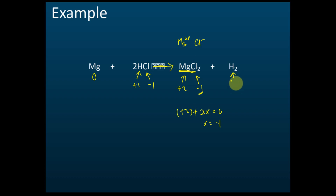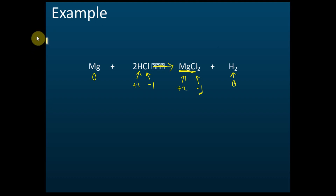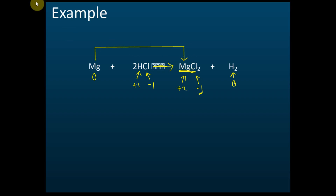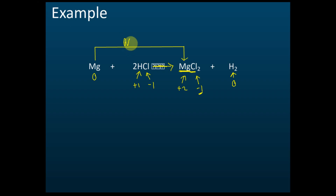Hydrogen in H₂ is zero because it is a neutral element. To determine whether a species undergoes oxidation or reduction, we look at its oxidation number. For magnesium: the oxidation number changes from zero to positive two — that is an increase — so magnesium undergoes oxidation.